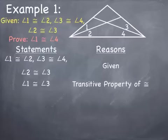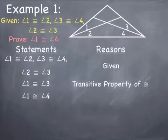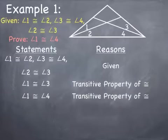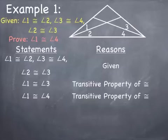Using the transitive property of angle congruence, I can say angle 1 is congruent to angle 3. Now looking at angle 1 congruent to angle 3 and angle 3 congruent to angle 4, both angle 1 and angle 4 are congruent to angle 3, so I can set angle 1 congruent to angle 4 — again using the transitive property of congruence. My last statement is what I was trying to prove, so I am done. Always look for something you can do from your given information — that is your starting point.